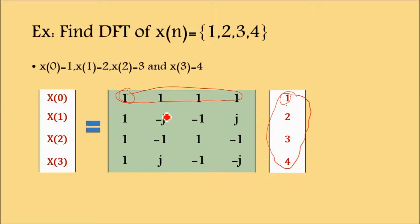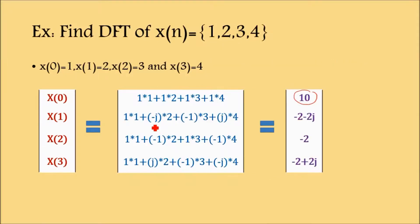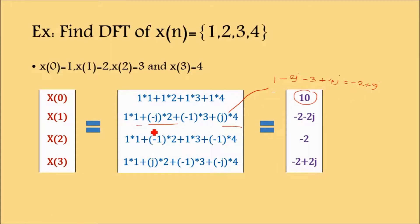For X[1], we get complex values. The calculation is 1×1 + 1×(-j)×2 + (-1)×3 + j×4, which gives: real part 1 - 3 = -2, imaginary part -2j + 4j = +2j. So X[1] = -2 + 2j.